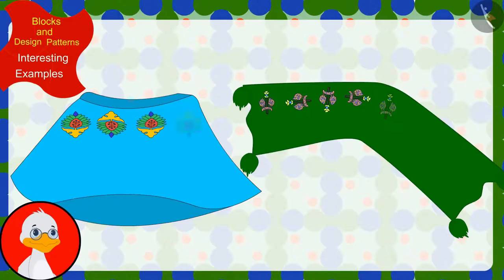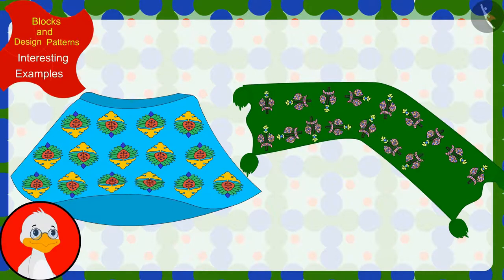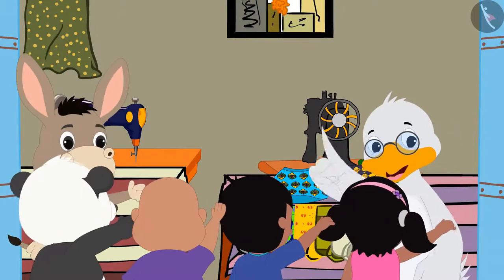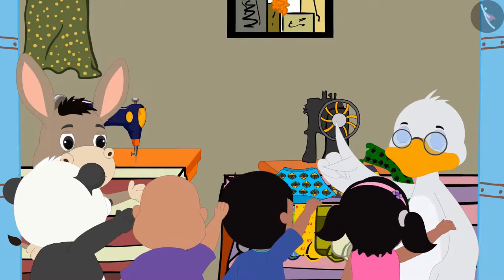Uncle also found the rules of those incomplete patterns and completed those patterns. All the villagers are liking the new pattern clothes sold at Cha-Cha's shop a lot.